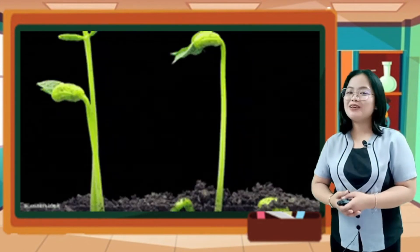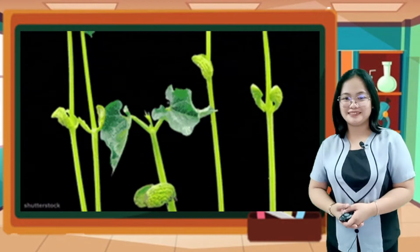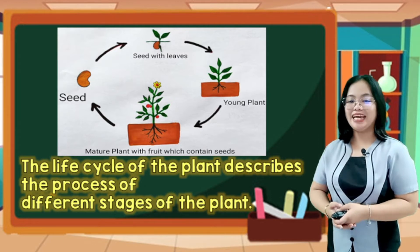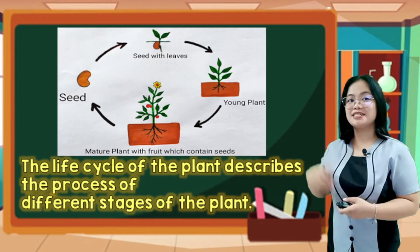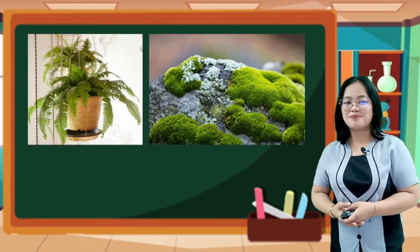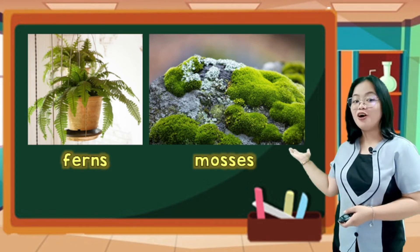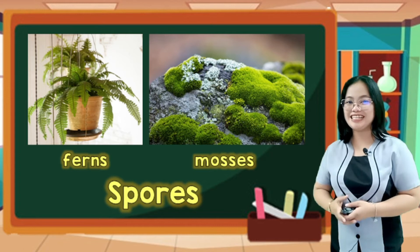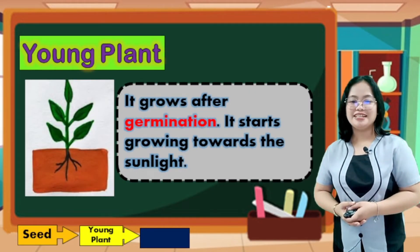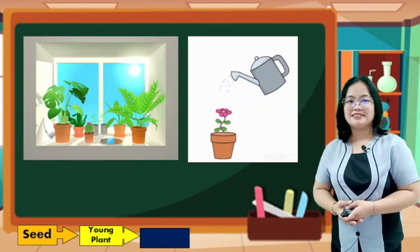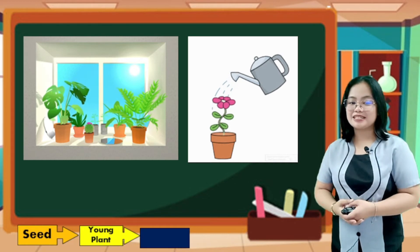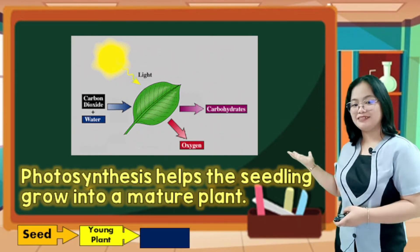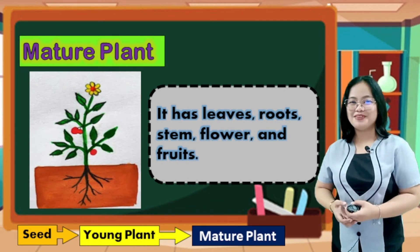Plants also undergo a life cycle and different stages of development. The life cycle of a plant describes the process of different stages of the plant's life — from the beginning to the end, from seed to mature plant. However, not all plants produce seeds; some plants like ferns or mosses create different kinds of cells called spores. A very young plant grows after germination and starts growing towards sunlight. Plants need sunlight, nutrients, water, and air to survive. Photosynthesis helps the seedling grow into a mature plant, which has leaves, roots, stem, flower, and fruits.